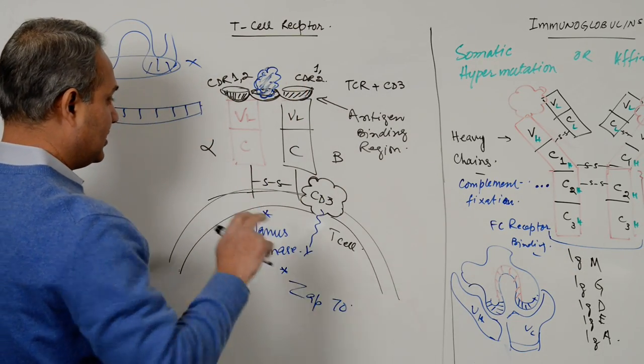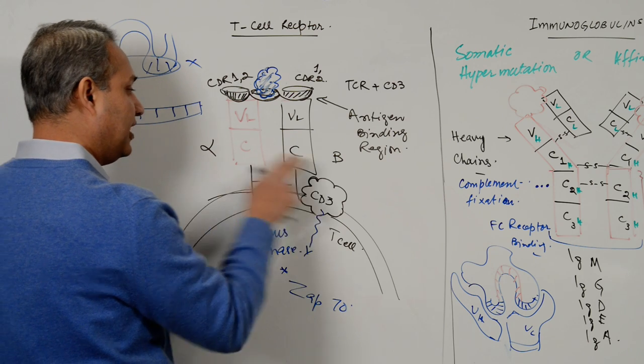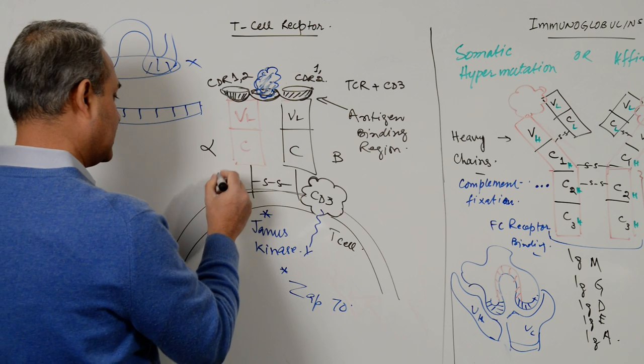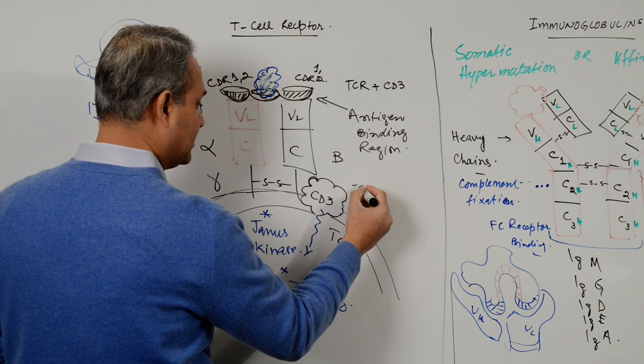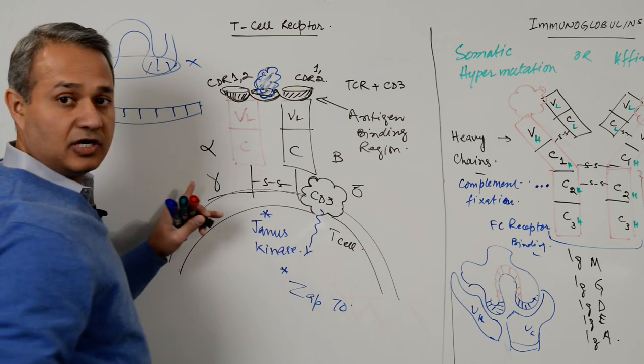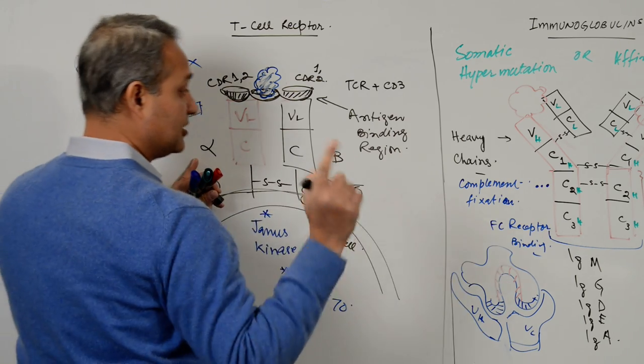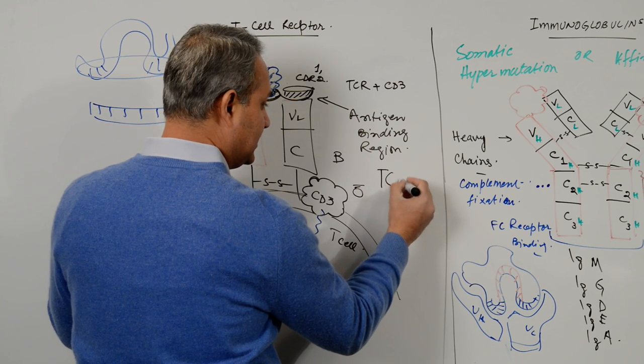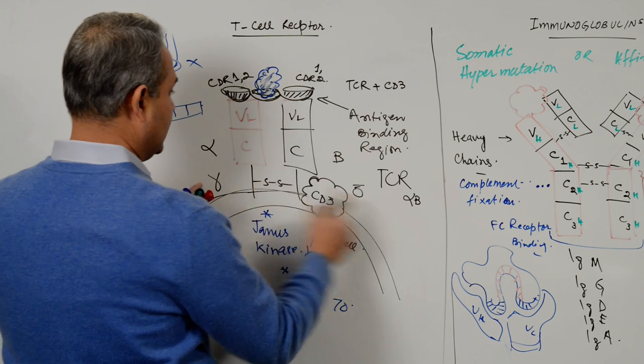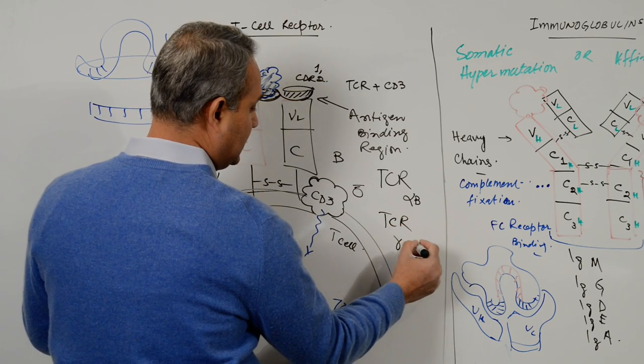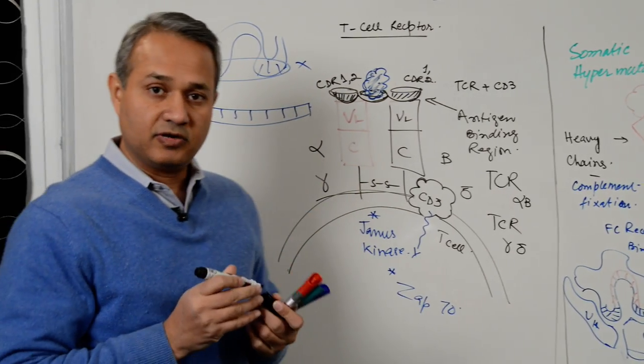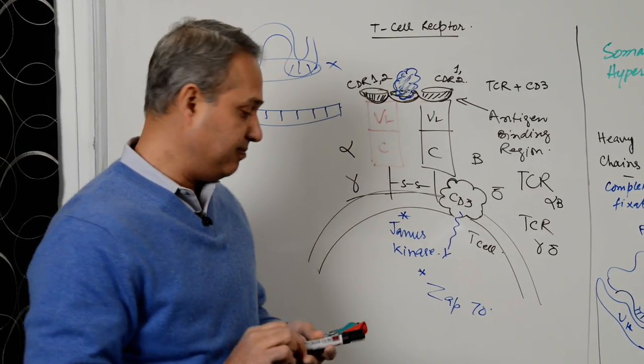The only thing you should remember is T cells have alpha and beta chains. There are some T cells which have gamma and delta chains as well, but these are less common. When we talk about T cell receptors with alpha and beta which are more common, we write them as T cell receptor alpha beta, and you can also write T cell receptor gamma delta. So let us talk about their formation, the genetic mechanism.